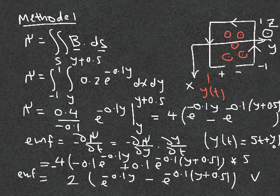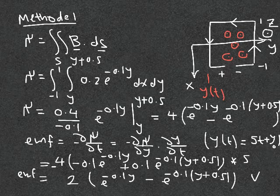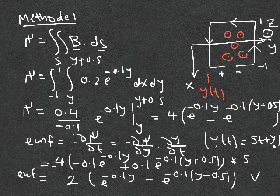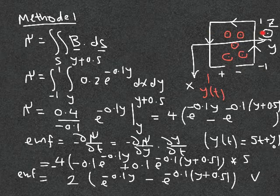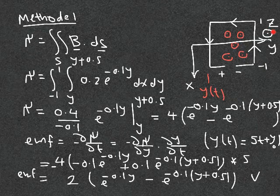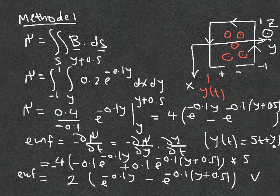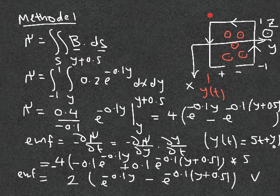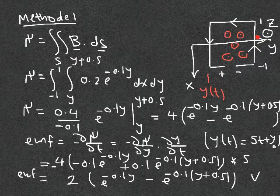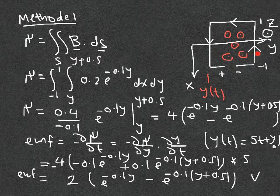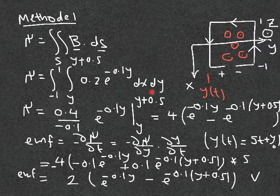I'm showing here a top view of the loop. The loop is moving in the y direction; z is coming out of the page, and the magnetic field is also coming out of the page. This sets the direction of integration and the reference polarity of the voltage, with dS coming out of the page as well. The left edge of the loop is called y, and the right edge is y plus 0.5.